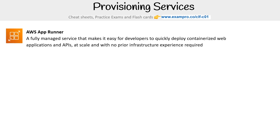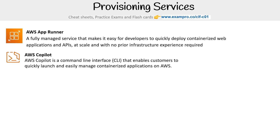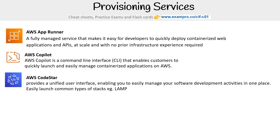We have AWS Copilot. This is a command line interface that enables customers to quickly launch and manage containerized applications on AWS. It's basically a CLI tool that sets up a bunch of scripts to set up pipelines for you, making things super easy.